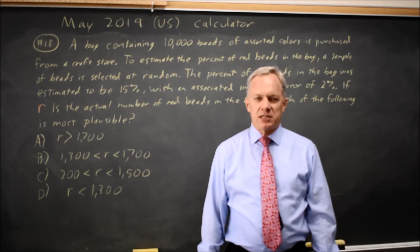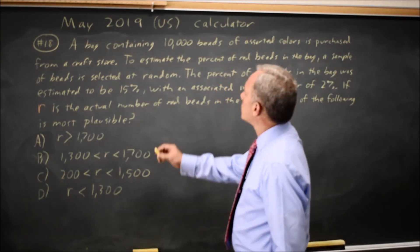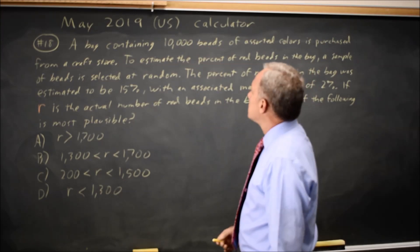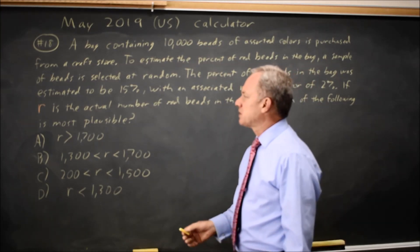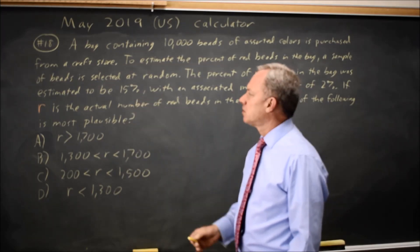This is calculator question number 18. College Board gives us a word problem describing a collection of 10,000 beads where a random sample gives us an estimate that 15% are red.